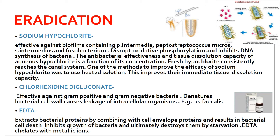To improve the efficacy of sodium hypochlorite, you can use a heated solution, which improves its immediate tissue dissolution capacity. The next method is chlorhexidine digluconate, which is effective against both gram-negative and gram-positive bacteria. Chlorhexidine denatures the bacterial cell wall, causing leakage of intracellular contents. It is particularly effective against Enterococcus faecalis.